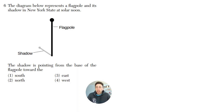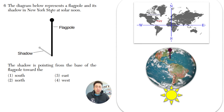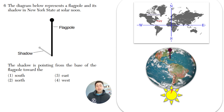Question six: the diagram represents a flagpole and a shadow in New York State at solar noon. The shadow is pointing from the base of the flagpole toward which direction — south, north, east, or west? New York State is located in the northern hemisphere. At solar noon, the sun is directly in front of that location. Since the sun shines from the south onto New York, the shadow will go toward the north. The answer is going to be north, because we're in the northern hemisphere.